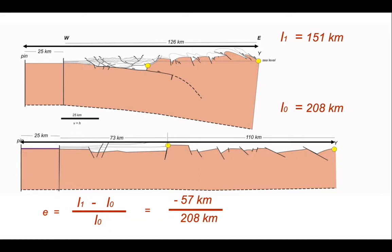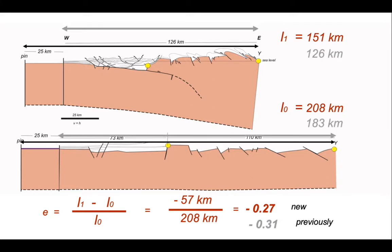The difference between the L1 and L0 is 57 kilometres. It's a negative value because that's a contractional structure. L0 is 208 kilometres. So the elongation is minus 0.27.